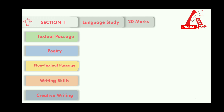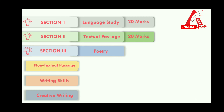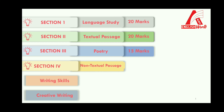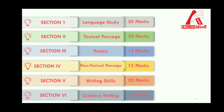Section number one will be on language study and it will be for 20 marks. Section number two will be on textual passages, for 20 marks. Section number three will be on poetry, for 15 marks. Section number four will be on non-textual passage, for 15 marks. Section number five will be on writing skill, for 20 marks. Section number six will be on creative writing, for 10 marks.